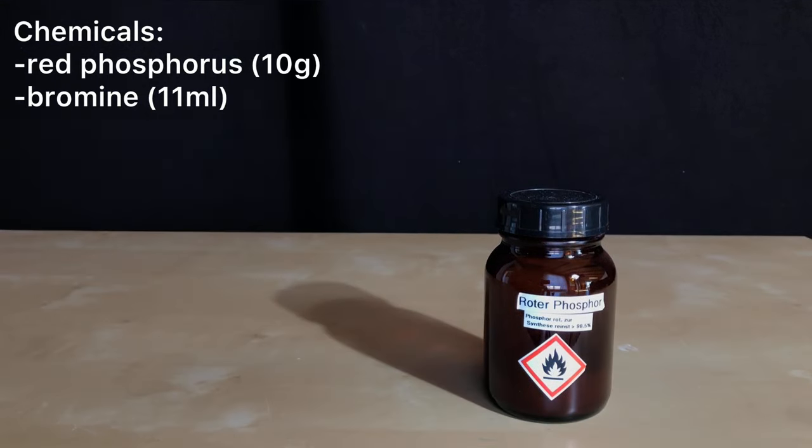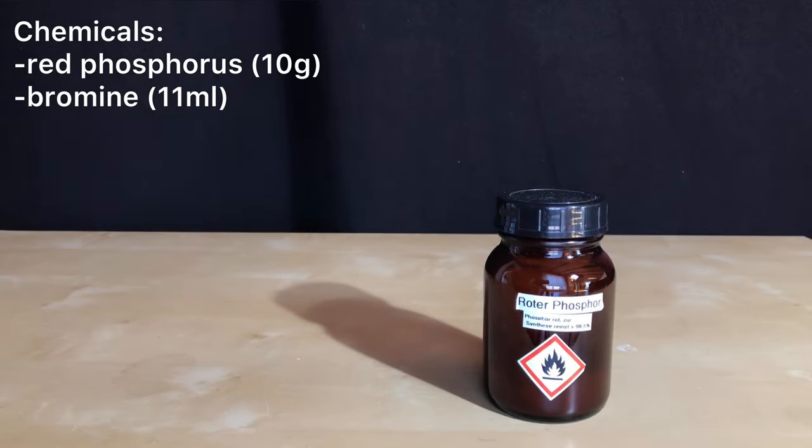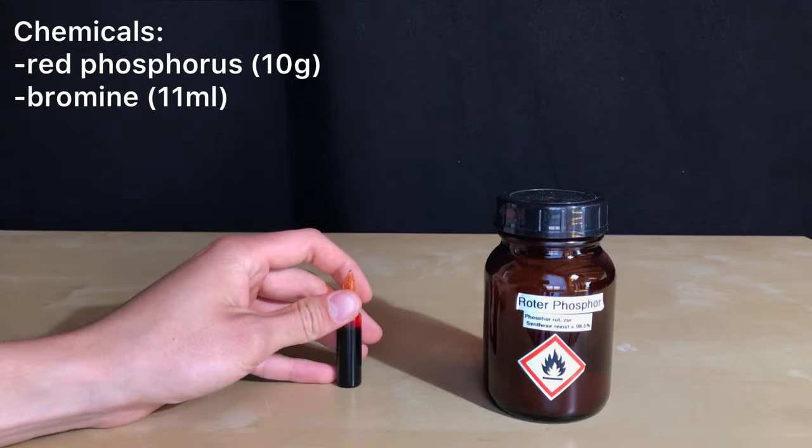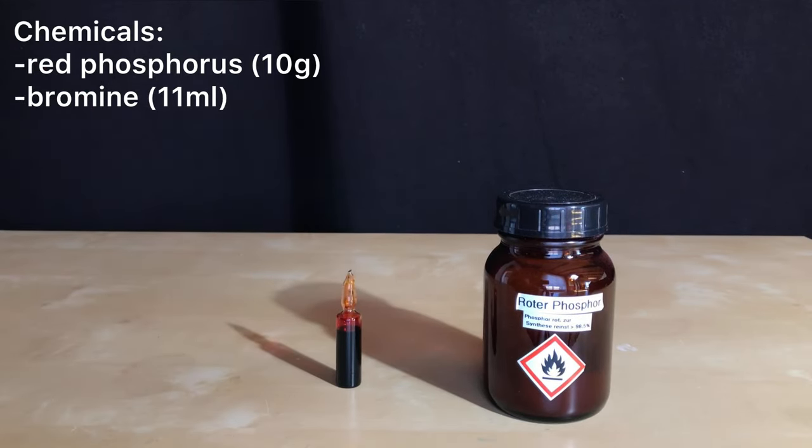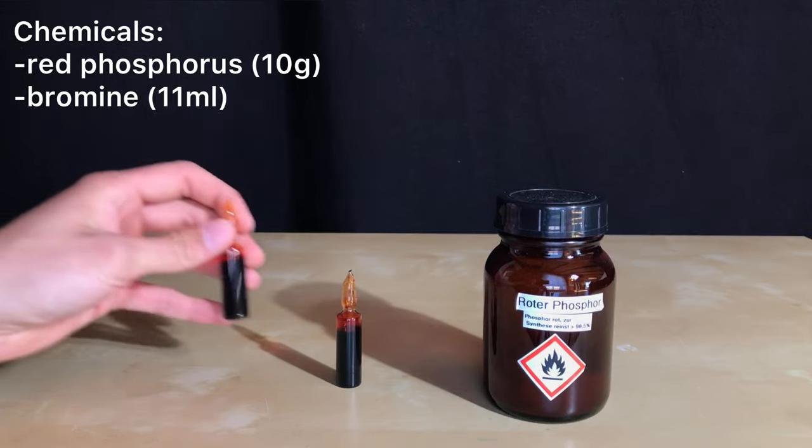Only two chemicals are needed: 10 grams of red phosphorus, which is a huge excess, and about 11 milliliters of elemental bromine. The last bromine I have will be used for this.